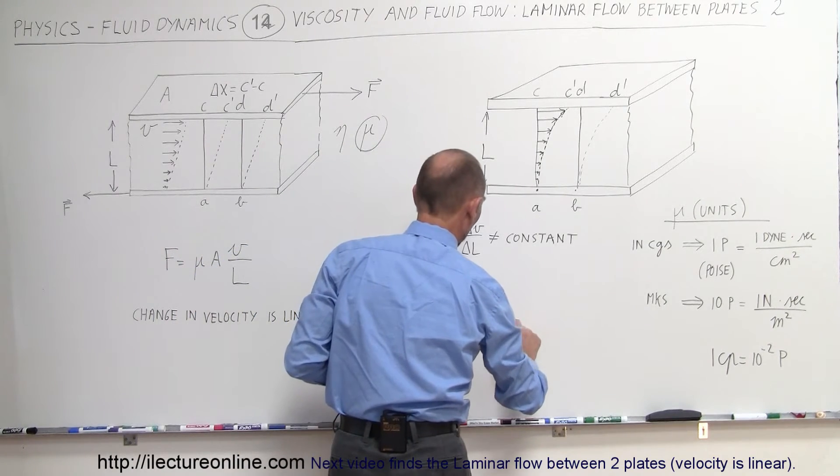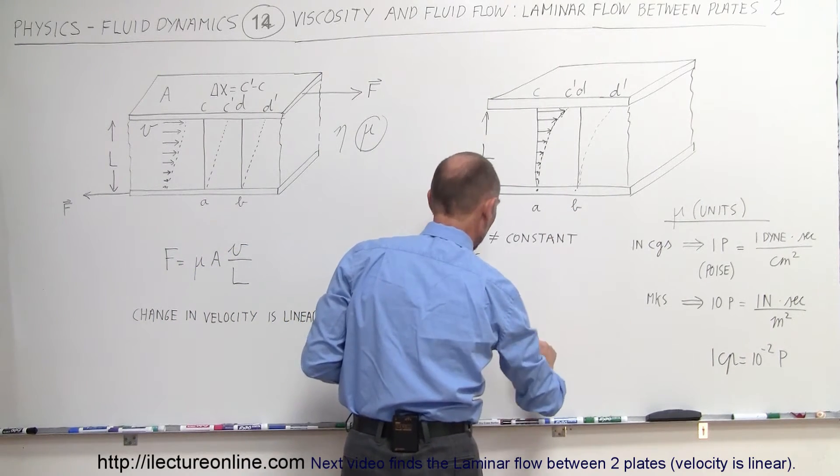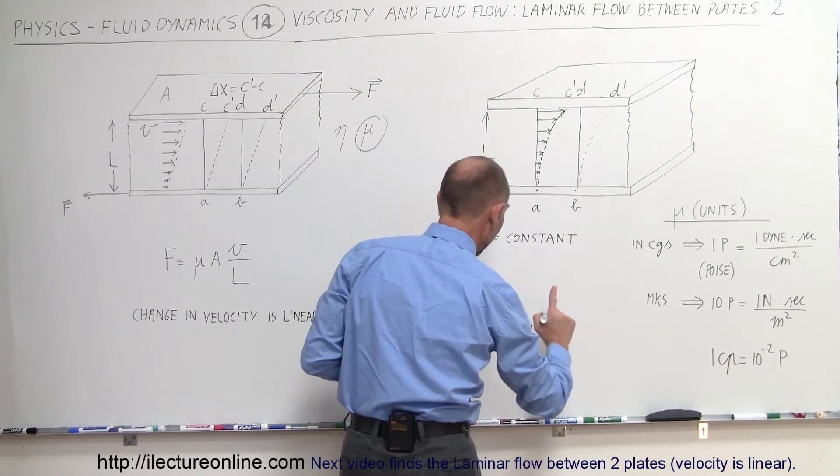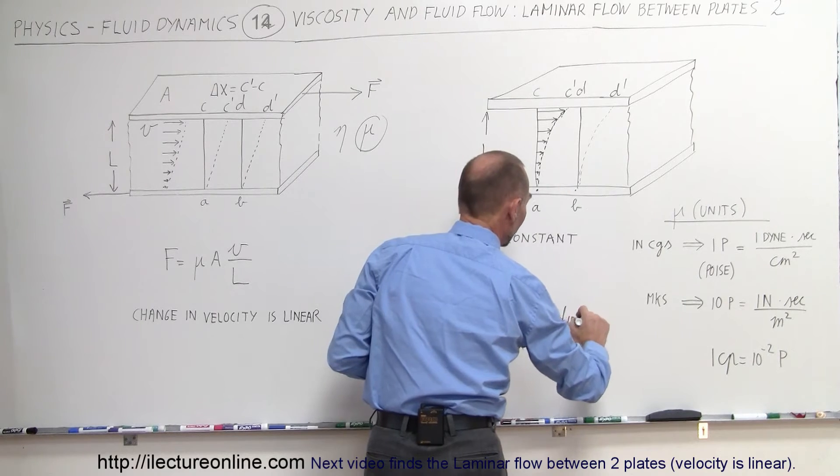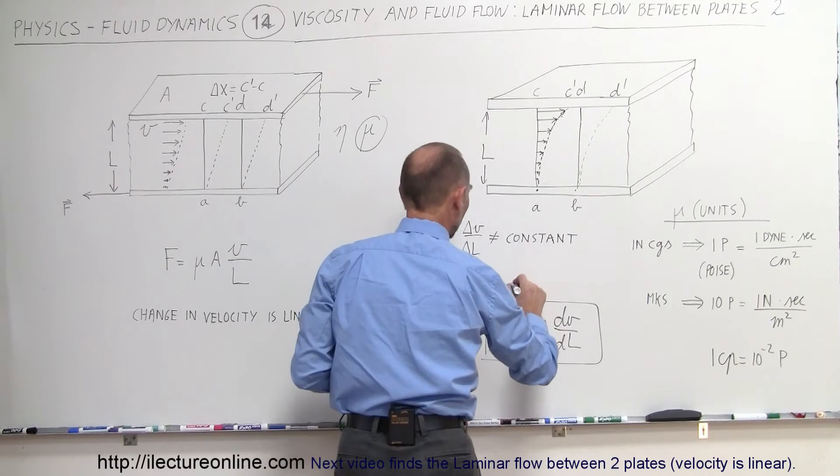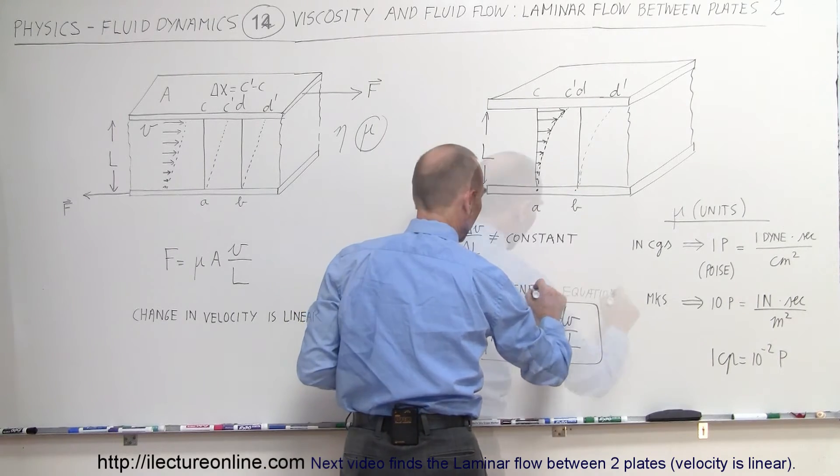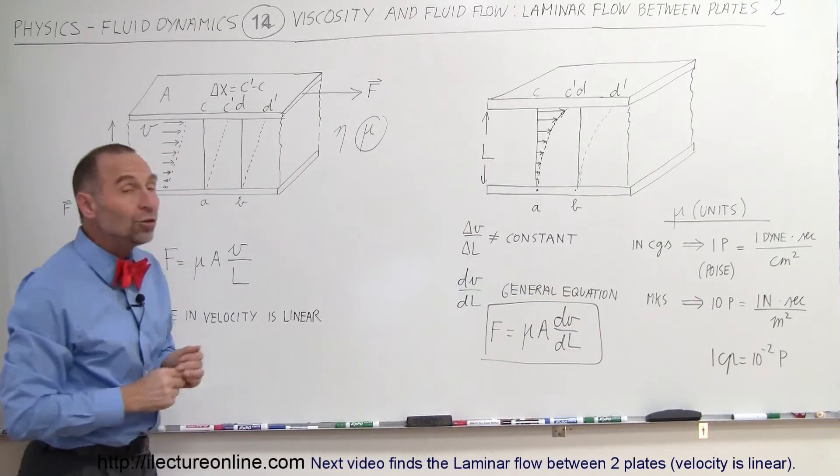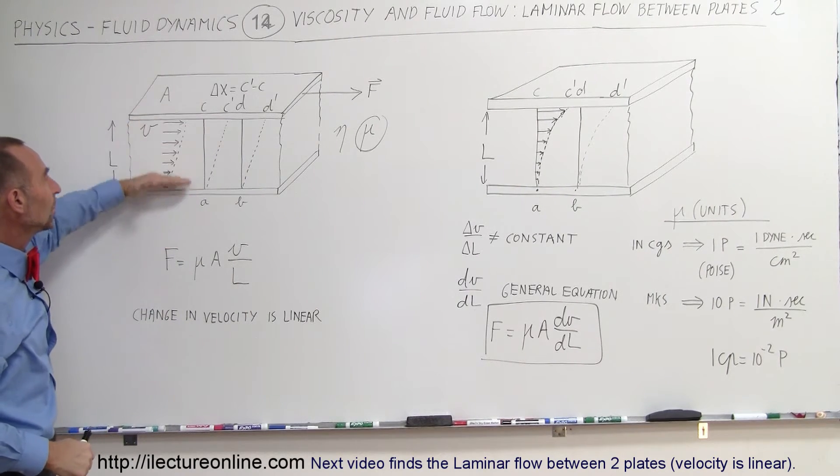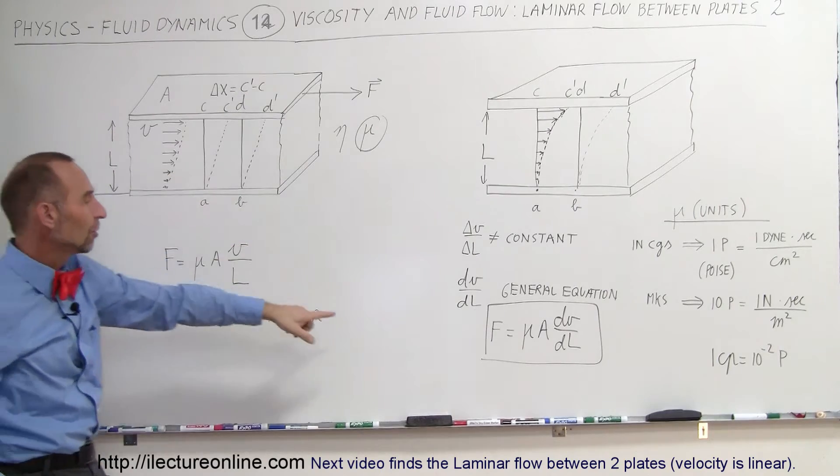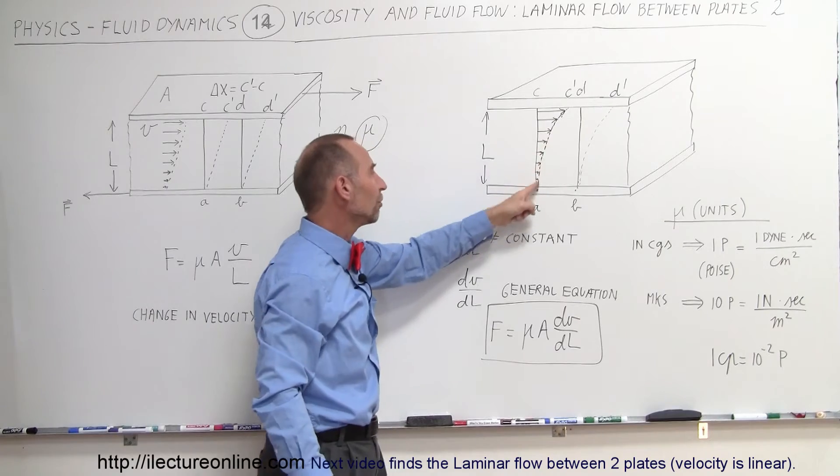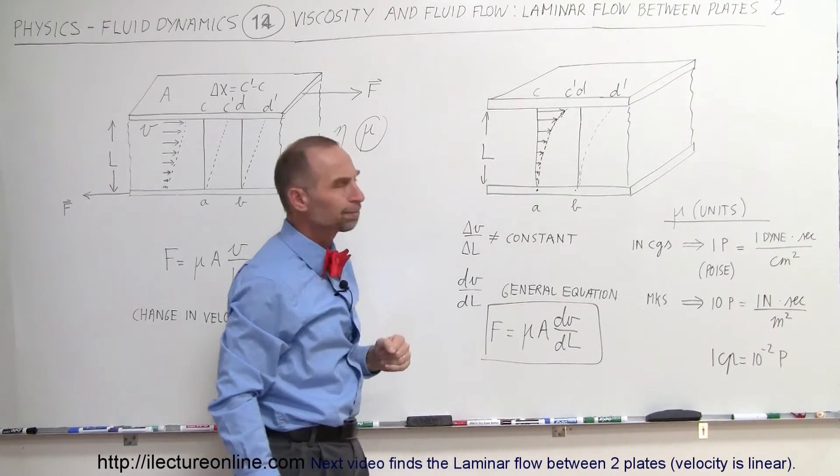The force required to move a plate to the right at a constant speed is going to be the coefficient of viscosity times the area of the plates times dv dl and that will now become what we call the general equation when you move a plate at the surface of a fluid like that. That will give us the force required as a function of the change in velocity as a function of l.